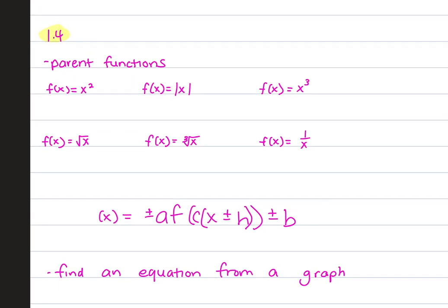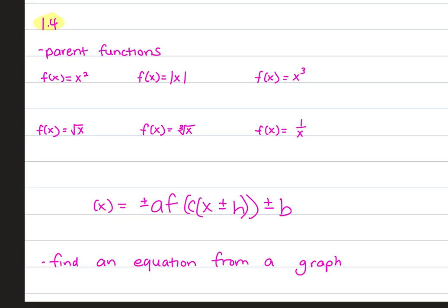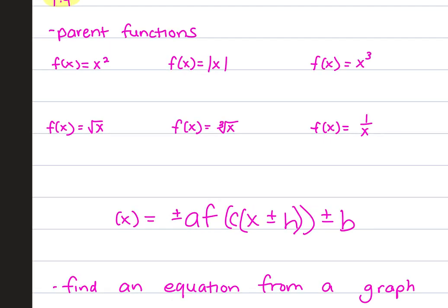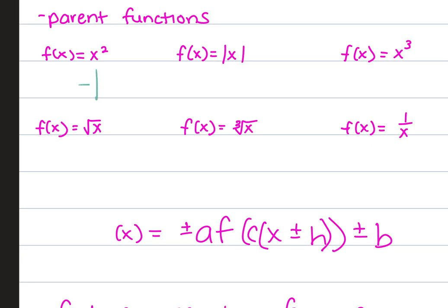All right, then came all of your transformations. So you need to know what all the parent functions look like so that you can then move them around. So we've got our x squared, our absolute value of x, our x cubed, our square root, our cube root, and our reciprocal function. So x squared is going to have a vertex at 0, 0, and then over and out one in both directions. Obviously that changes with a stretch or a shrink. Absolute value, same three points, but we make it a v because that slope would be constant.